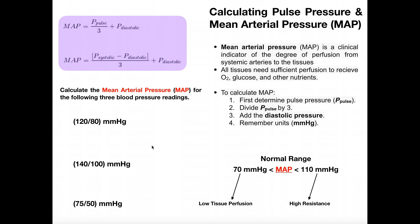In this video we'll do three things. We'll first talk about what mean arterial pressure is, which we typically abbreviate MAP. Then we're going to do some calculations with mean arterial pressure, learning how to calculate it. And then we'll talk about the clinical significance of when it's out of the normal range.